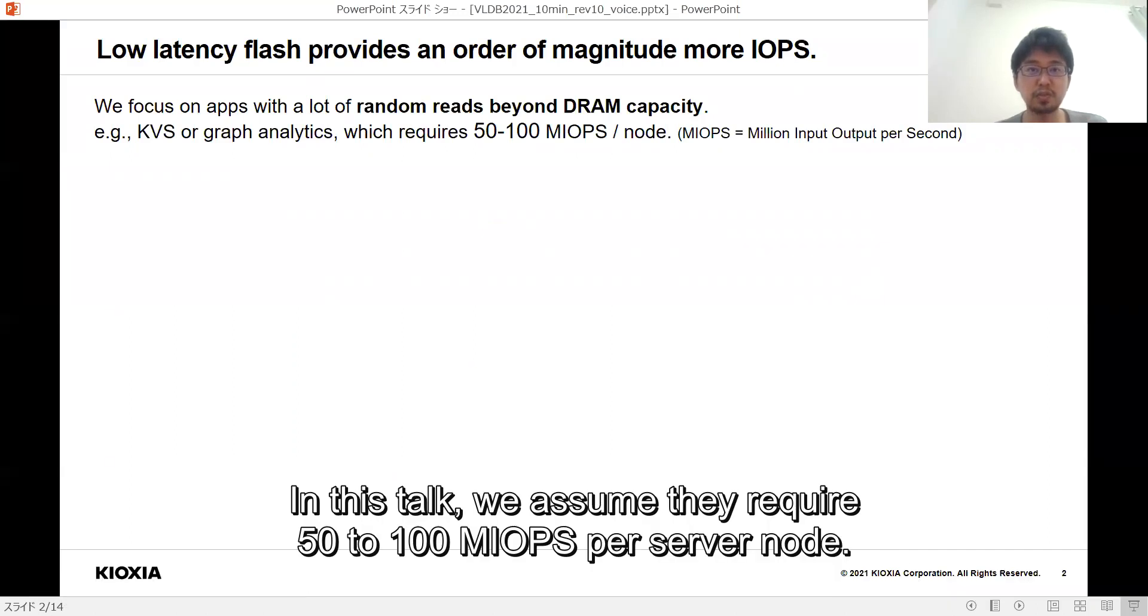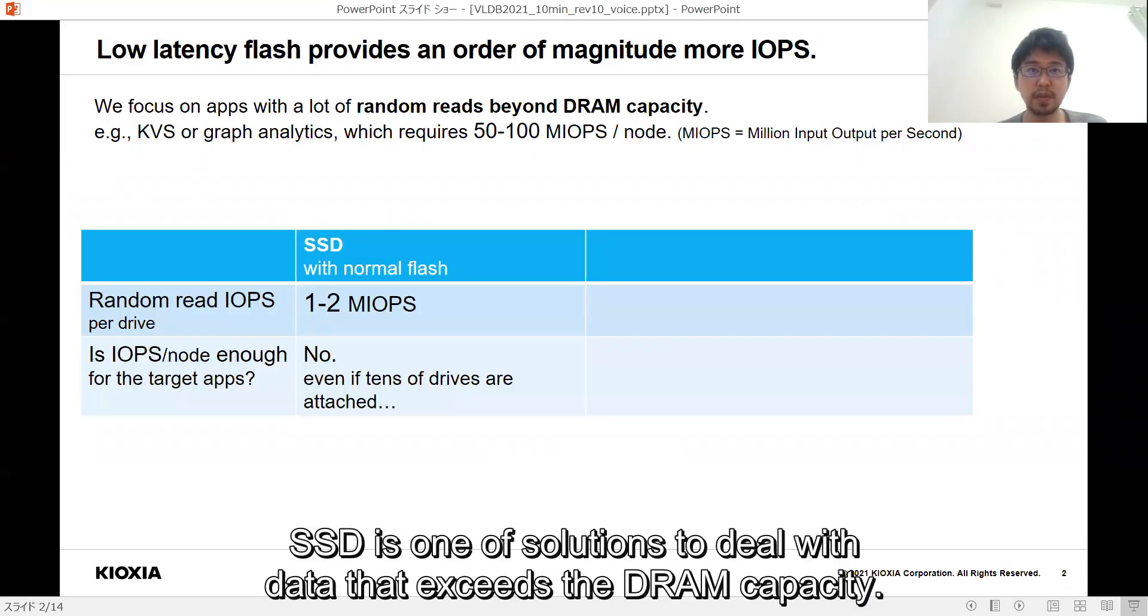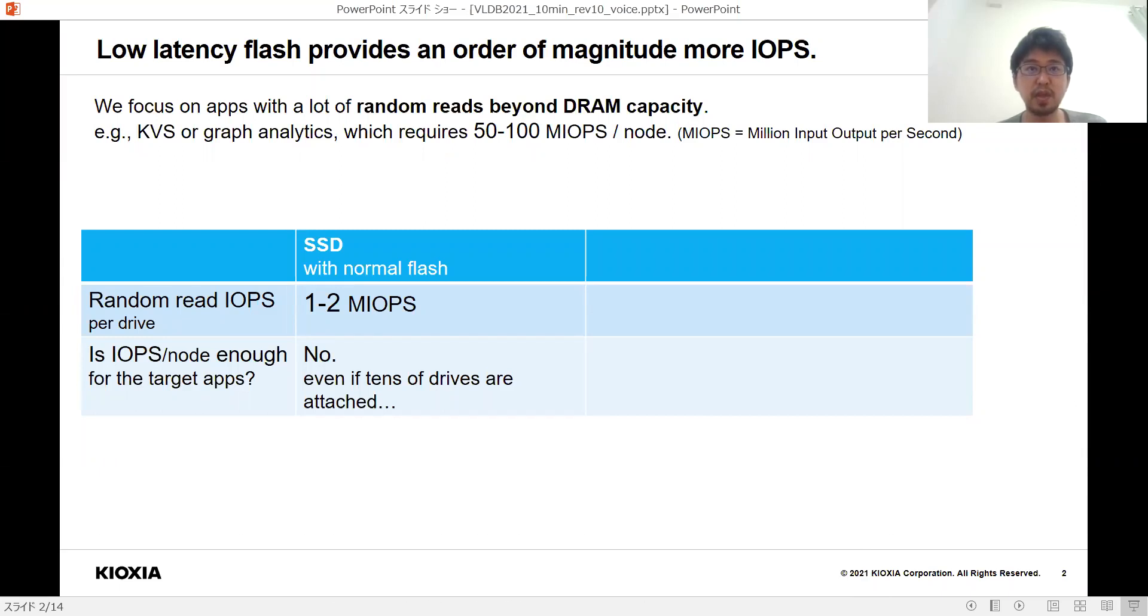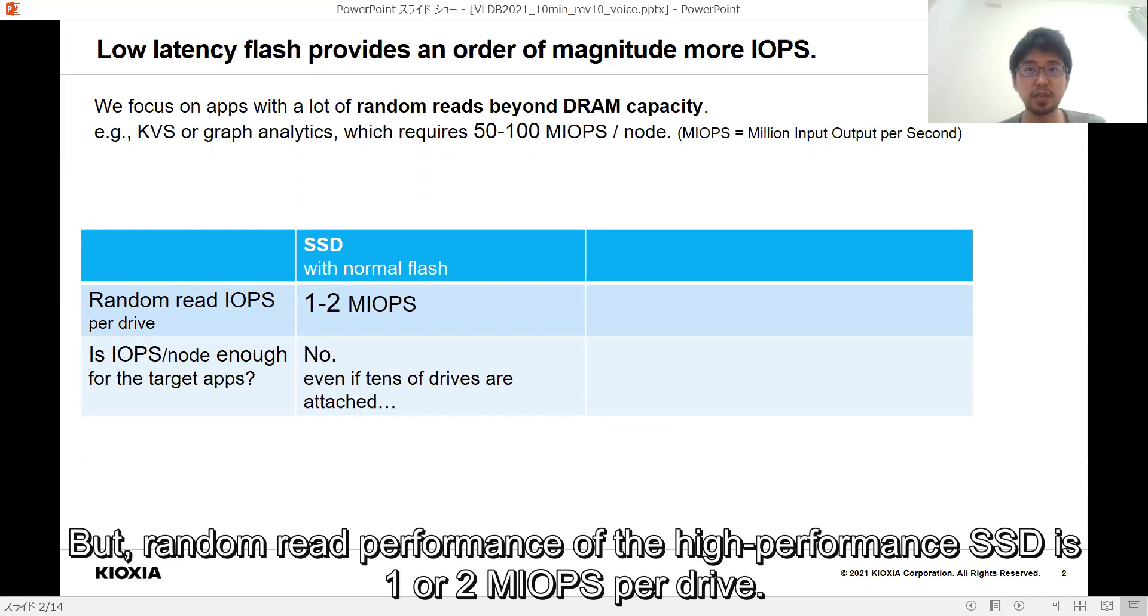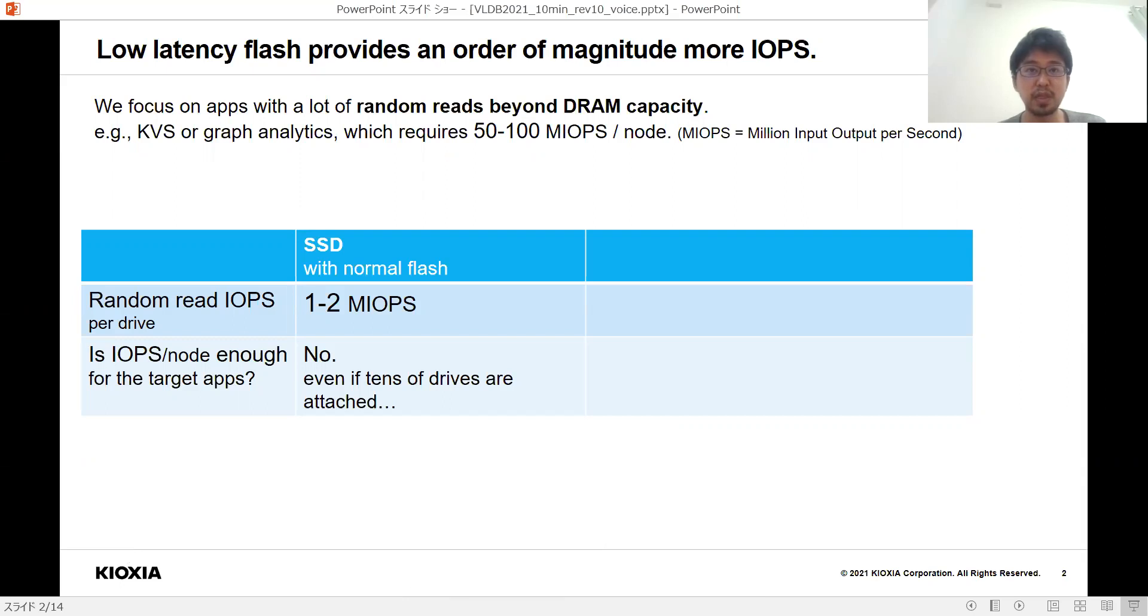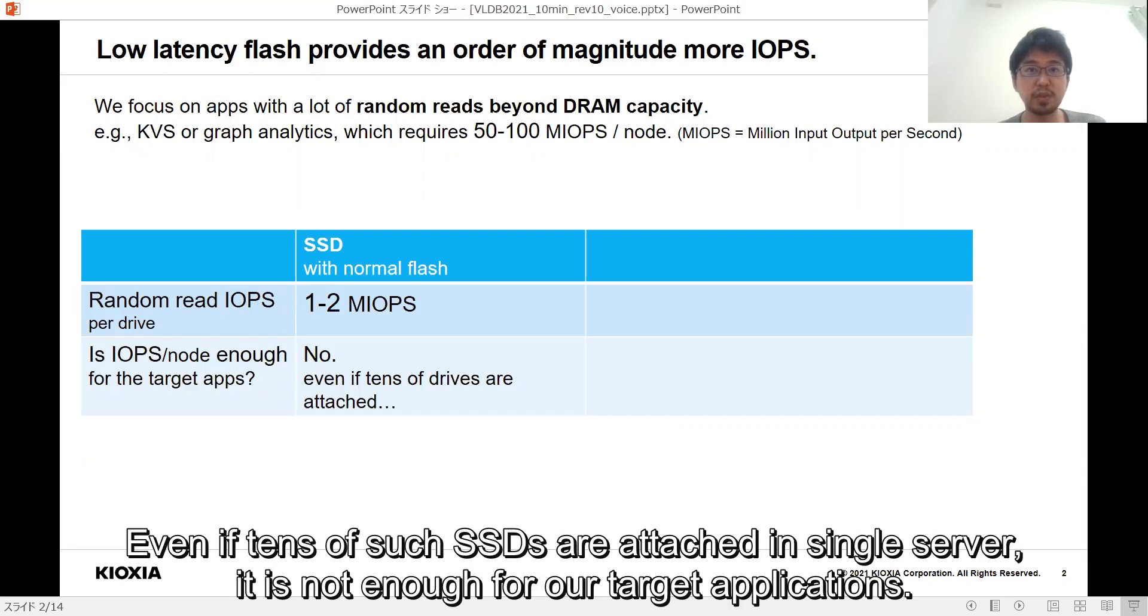In this talk, we assume they require 50 to 100 million IOPS per server node. SSD is one of the solutions to deal with data that exceeds the DRAM capacity, but random read performance of the high-performance SSD is 1 or 2 million IOPS per drive. Even if tens of such SSDs are attached in single server, it is not enough for our target applications.